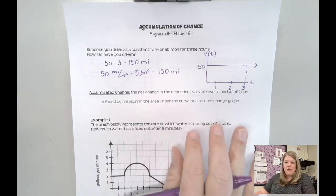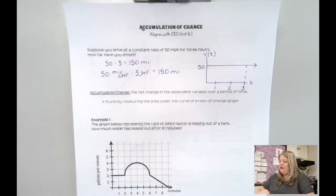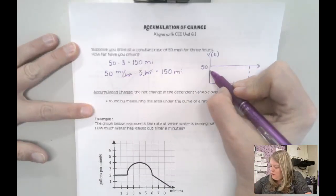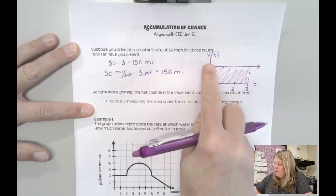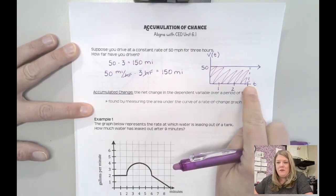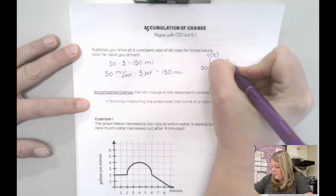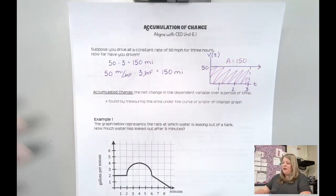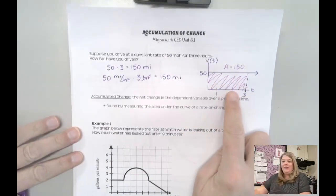The questions are going to get harder than this. If I were to give you this same scenario and ask you that same question, technically what you're doing when you're doing the 50 times three is you are finding this area. This area here would be 50 times three — my scale is way off here — and so that area is equal to 150 because it's 50 times three. And that's my accumulated change.